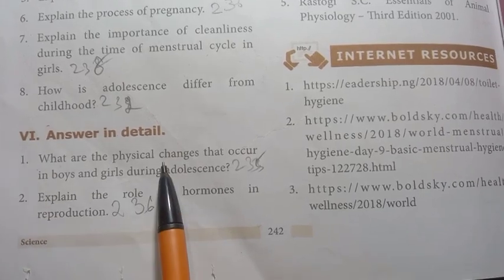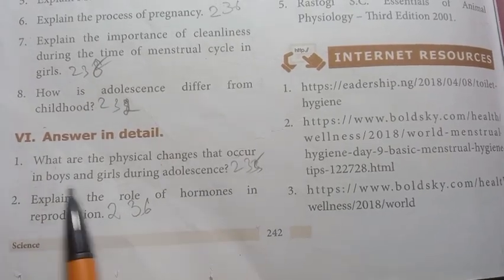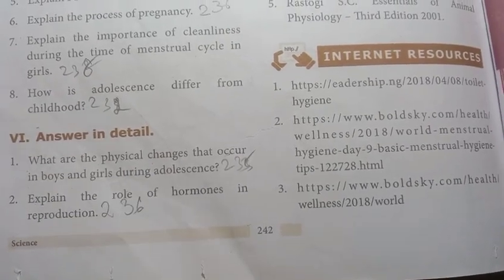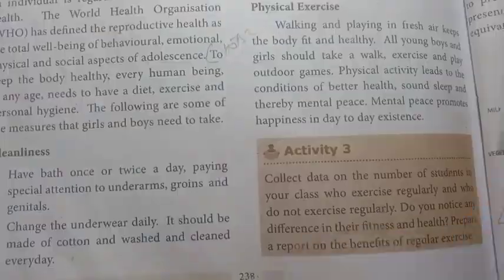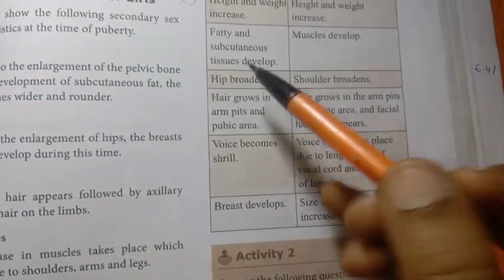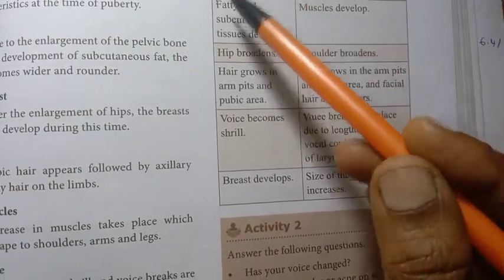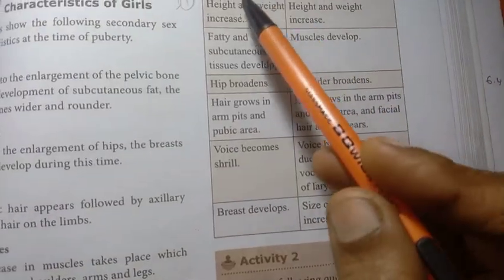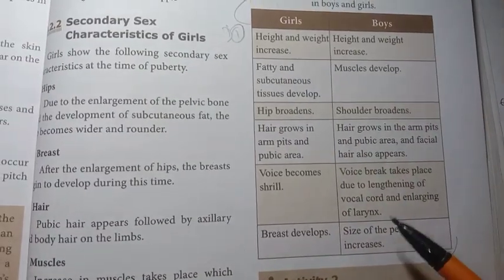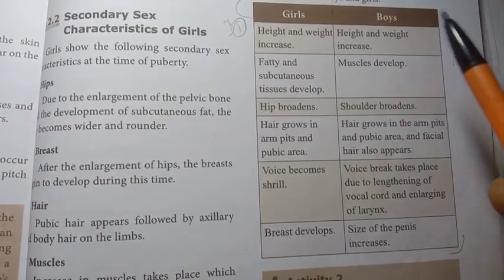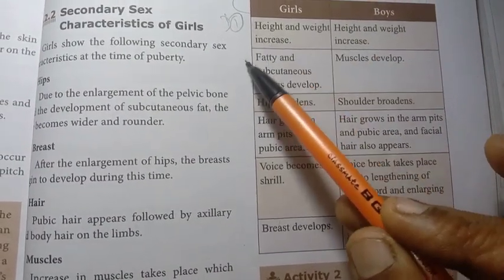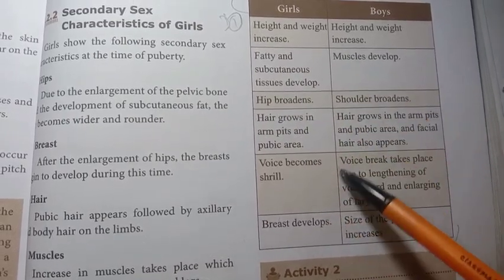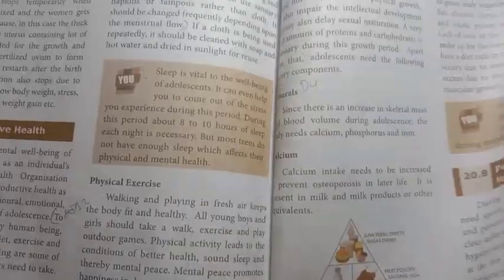First question: What are the physical changes that occur in boys and girls during adolescence? Page number 235. This covers body and weight increase — all about the physical changes in girls and boys. Detail for the first point and then the second one.